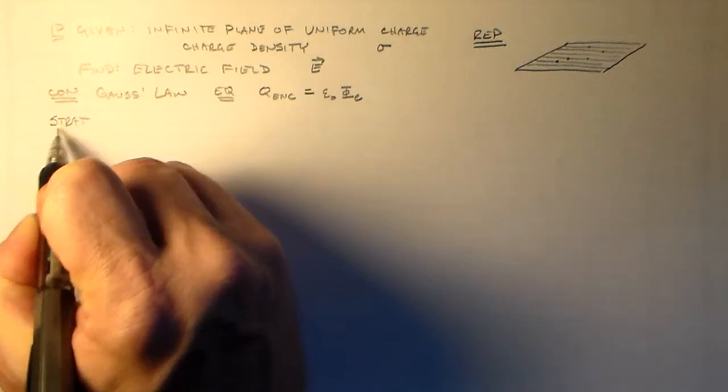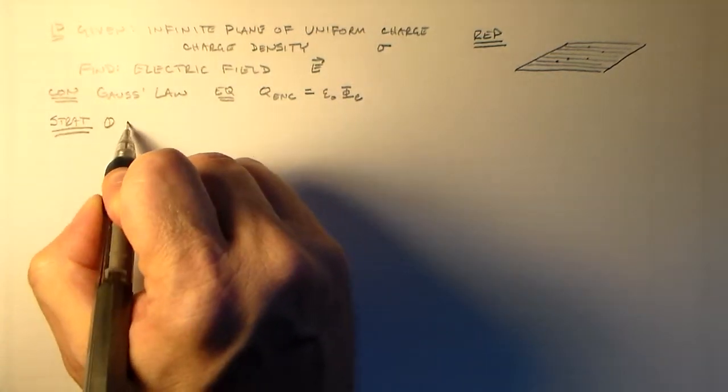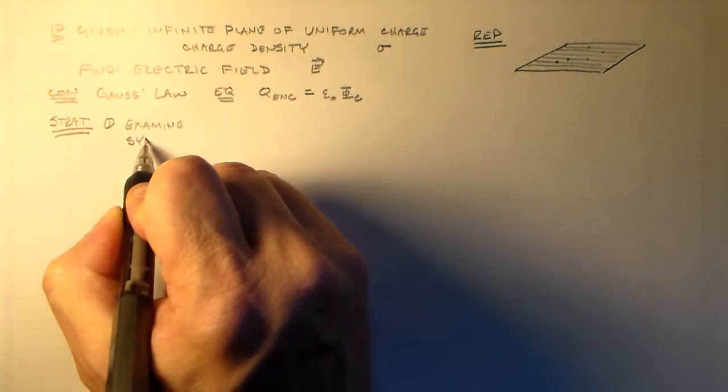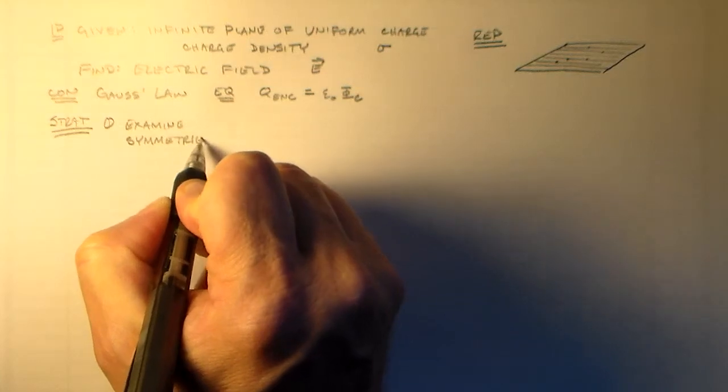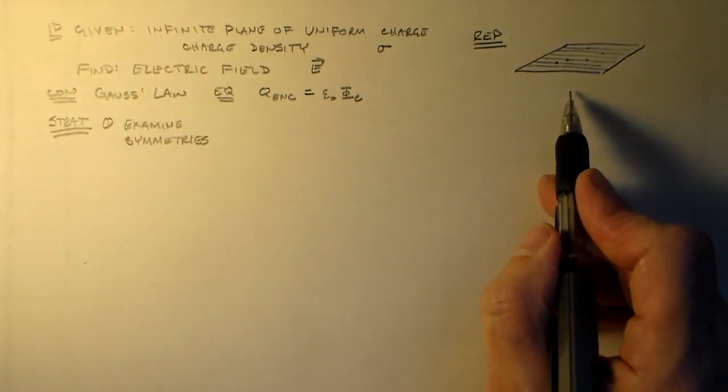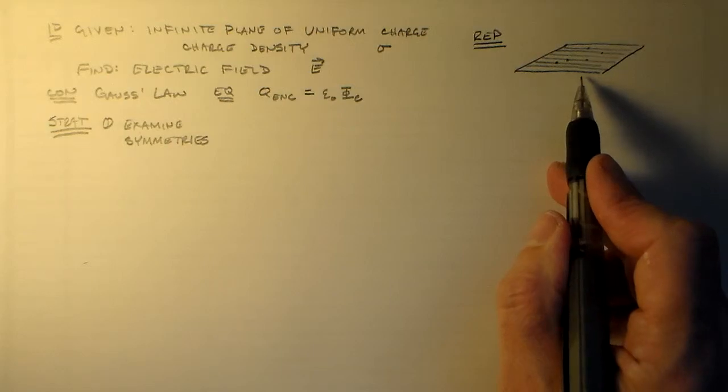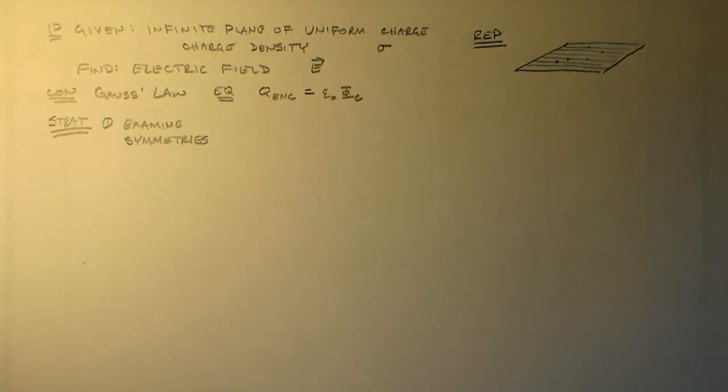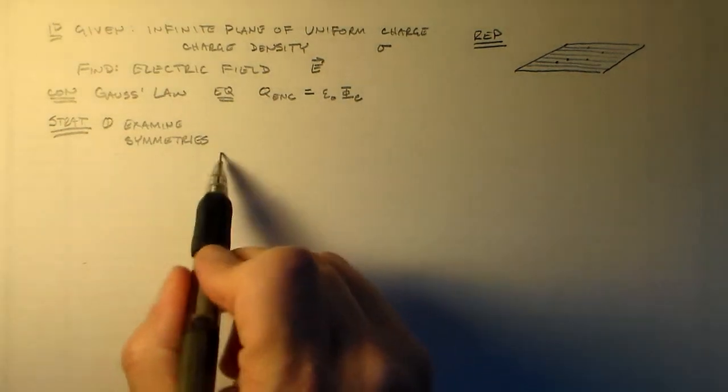The strategy for using Gauss's Law is first we want to examine the symmetries. And that's going to be the long part of this. We've done this in class, and if you look at my lecture notes it's like three very loose pages. They're very different from the pages that I normally have. And that's because most of it's just discussion about general things. And that's examining these symmetries.